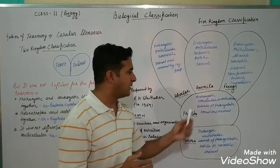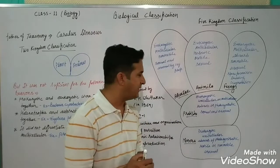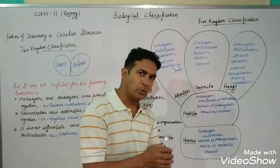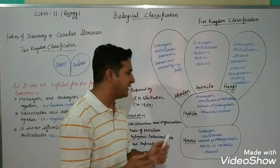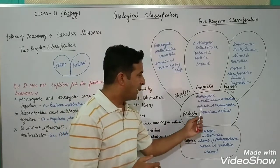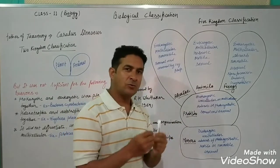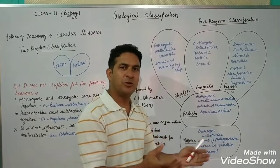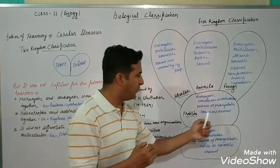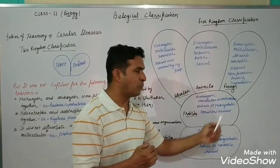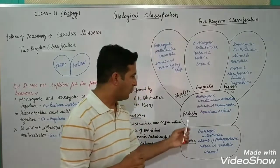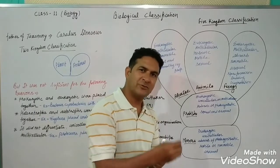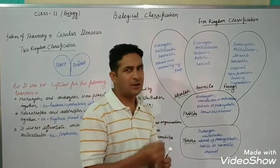Kingdom Protista contains eukaryotic organisms — both unicellular and multicellular types are included. Some are holozoic in nutrition, like protozoa such as Amoeba, while others are photosynthetic, like Euglena. They reproduce by two modes: sexual reproduction and asexual reproduction.